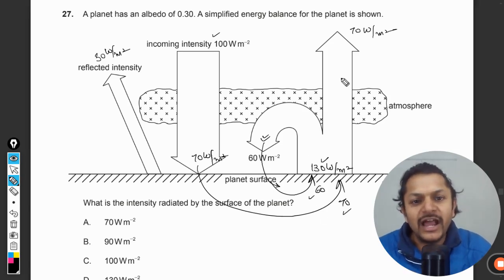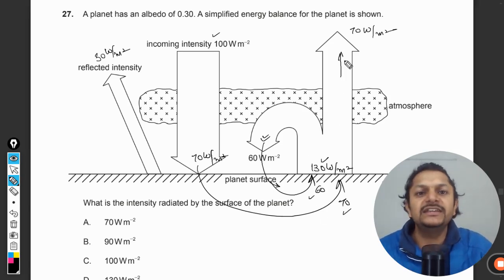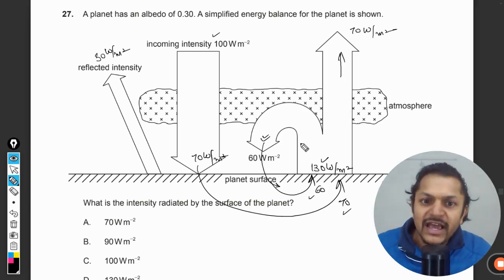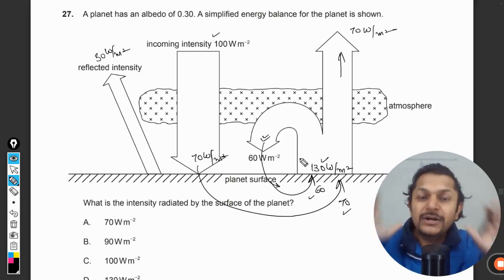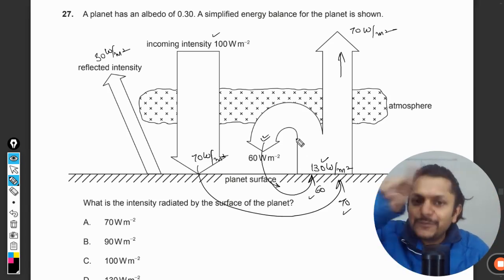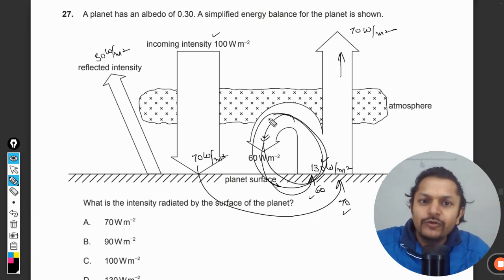So 70 plus 60 is 130, and out of this 130, 70 is emitted back to the space and 60 W/m² energy is trapped inside the atmosphere, which keeps on moving like this.